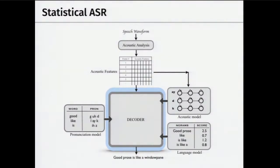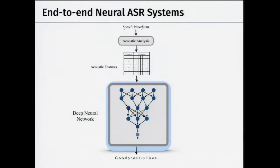A new hot direction is end-to-end ASR systems that do away with the separate components — no pronunciation model, no phone-level modeling. Instead, you directly learn a mapping from acoustic features to characters, then use character-level language models to re-score. The advantage is that you no longer need the expert-derived word-to-phone mapping, which changes for each language. In principle, all you need is speech and corresponding text — though the catch is you need lots and lots of data for this to work well.